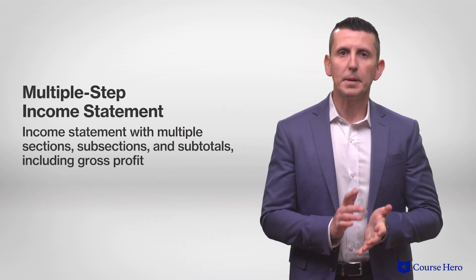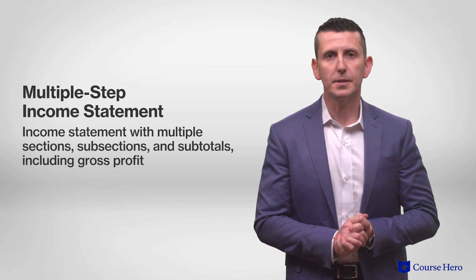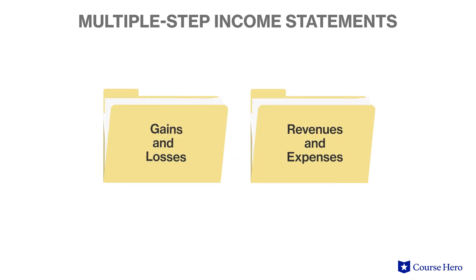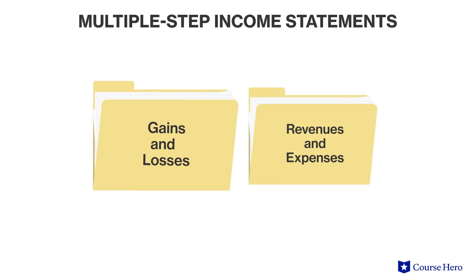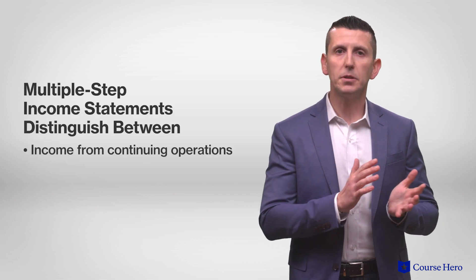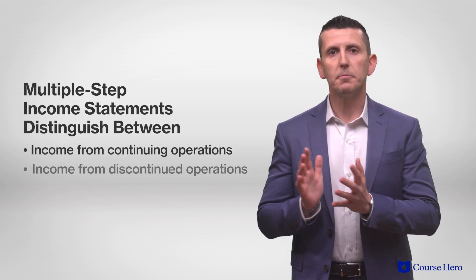Income statements prepared the multiple-step way will have multiple sections, subsections, and subtotals, including gross profit. Multiple-step income statements present gains and losses separately from revenues and expenses. Similarly, revenues and expenses connected to operating income are reported separately from all other revenues and expenses. This separation allows multiple-step income statements to distinguish between several levels of income.